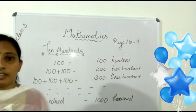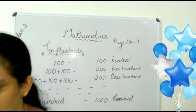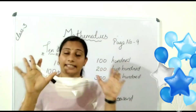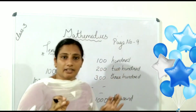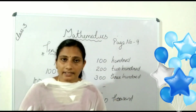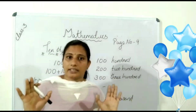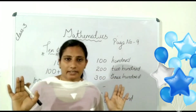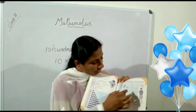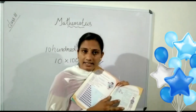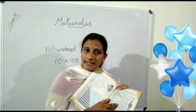Yes, children, here 10 hundred make 1000. All of you understand? 10 hundreds make the number 1000. Children, all of you fill this table using your pencil.